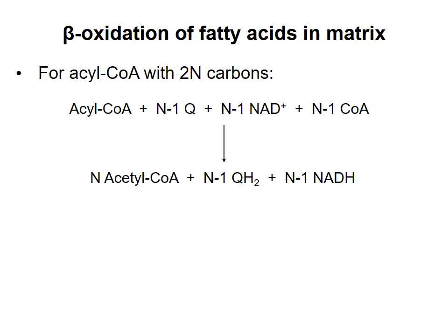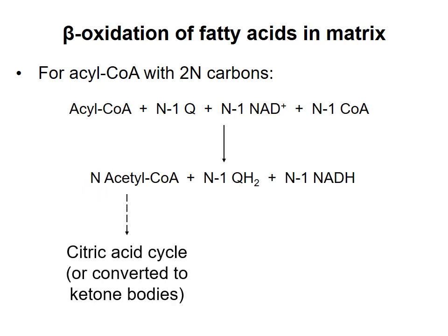The net reaction for this process is shown here. If we assume a saturated acyl-CoA chain with 2N carbons, then we'll need N-1 turns of the cycle to completely convert the acyl-CoA into acetyl-CoA. We'll end up with N molecules of acetyl-CoA, which can enter the citric acid cycle. Liver cells can convert some of these to ketone bodies, which I'll describe in the next video. We'll also get N-1 molecules of NADH and QH2, which give their electrons to the electron transport chain, allowing synthesis of ATP.